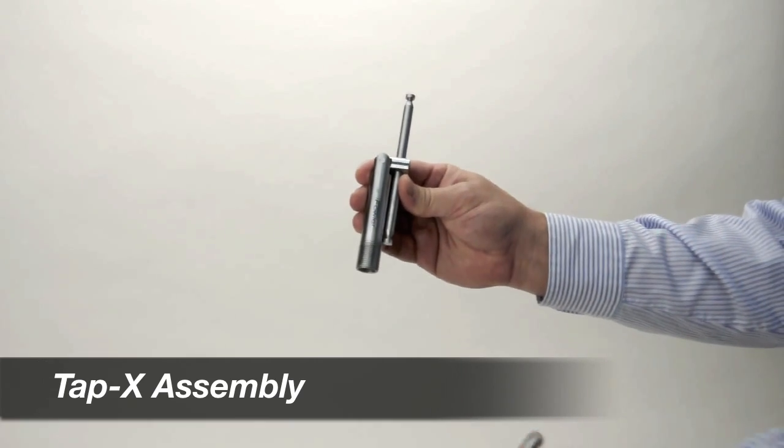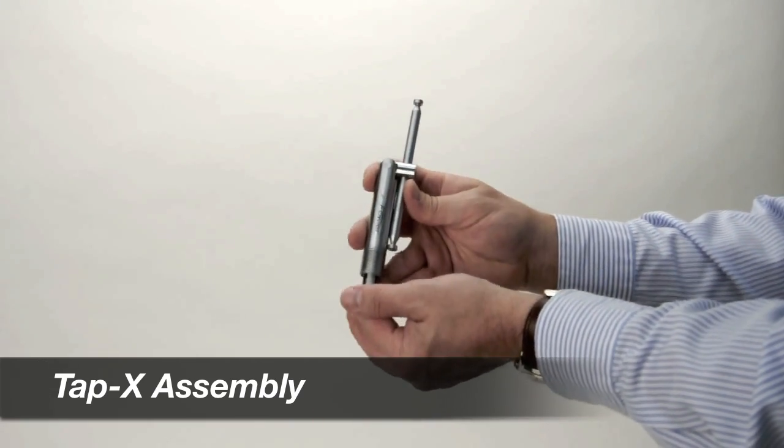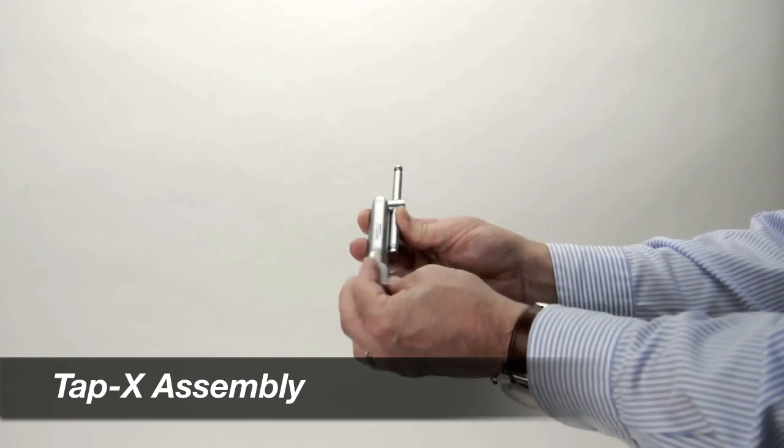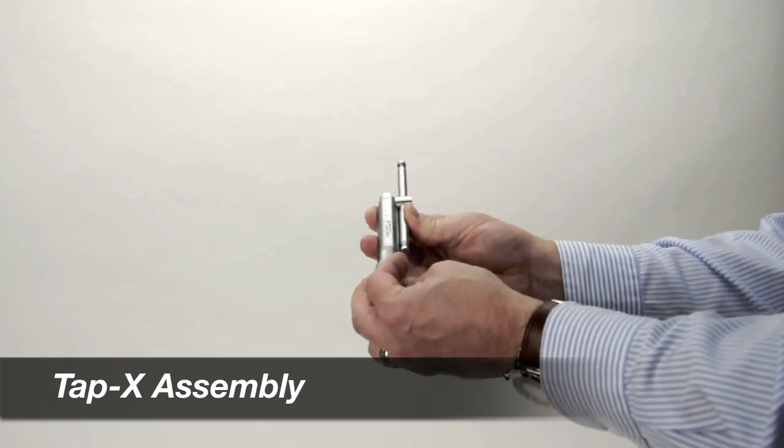To assemble the TAP-X, first insert and turn the collet until it is seated on the inner pin. Carefully thread the knurled sleeve onto the wrench body and screw it on until it is just firm.